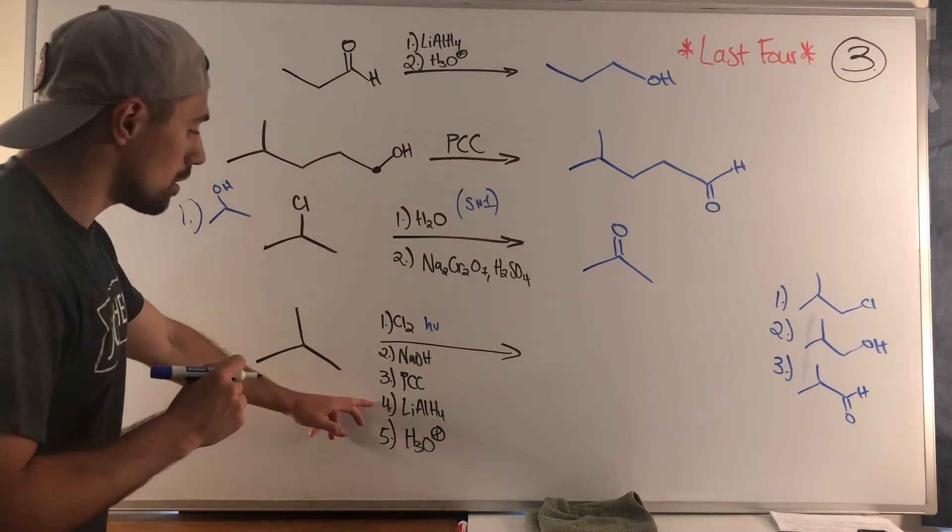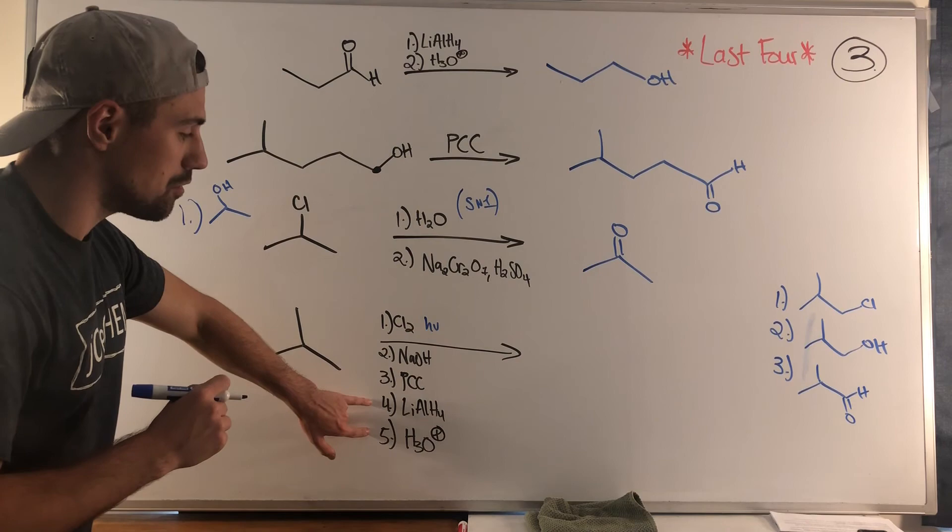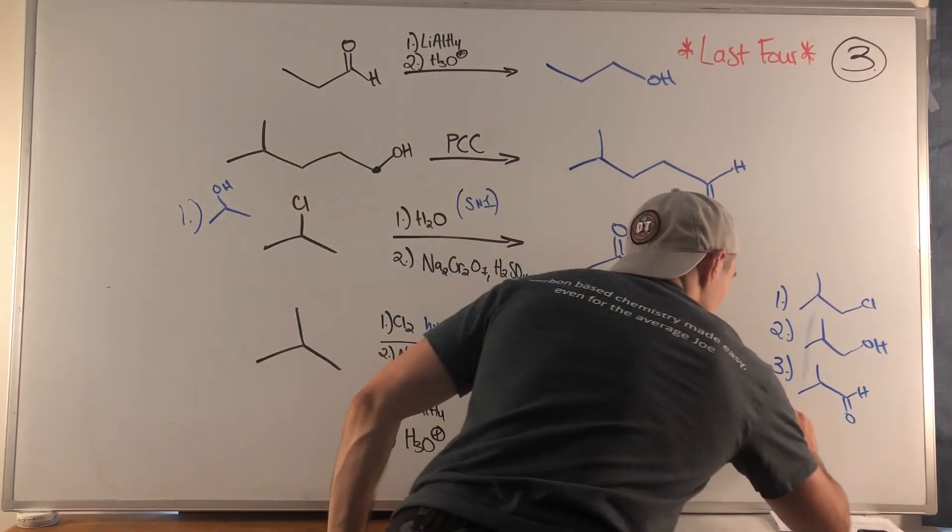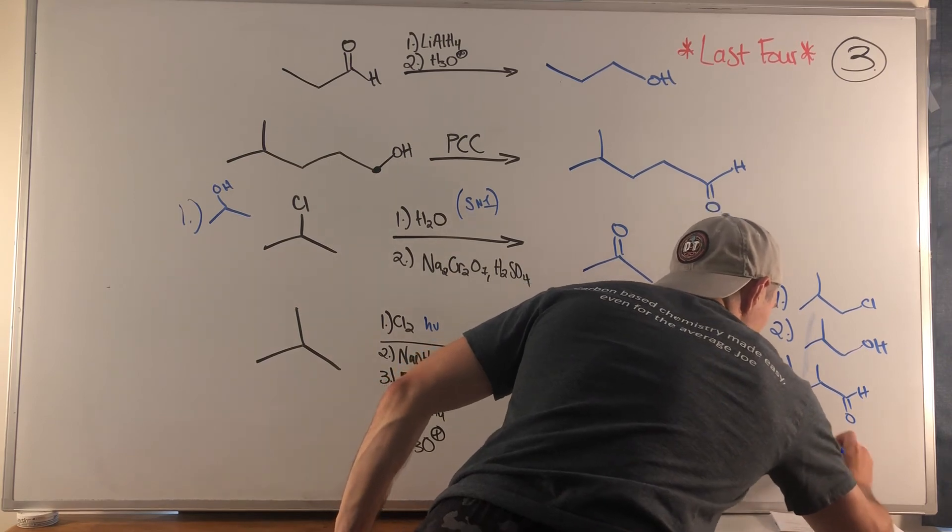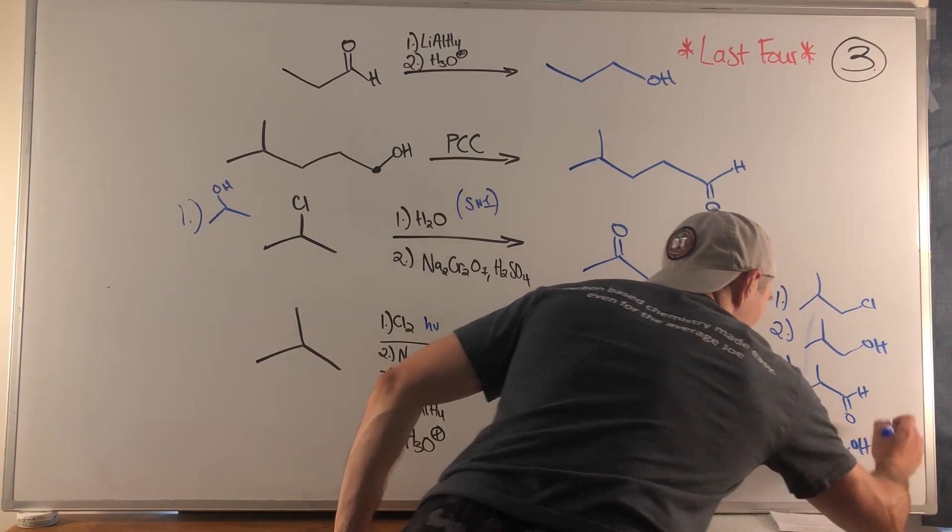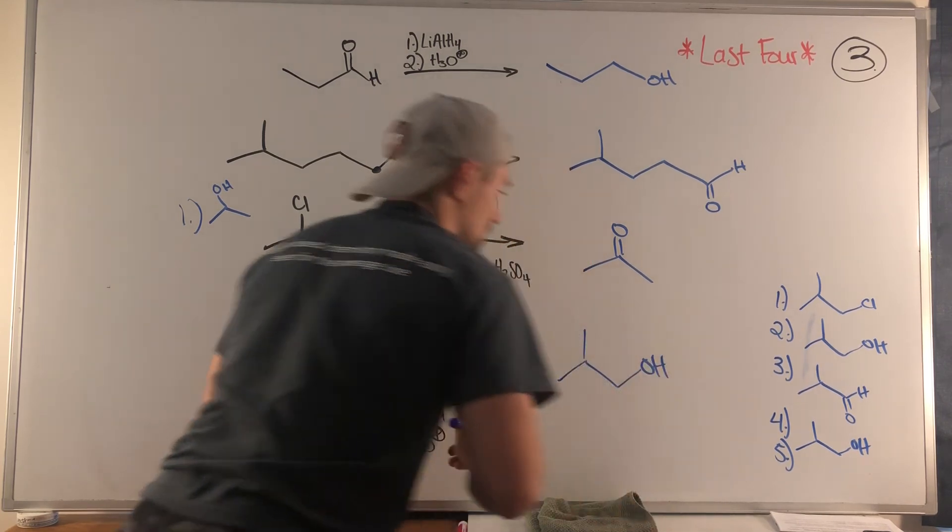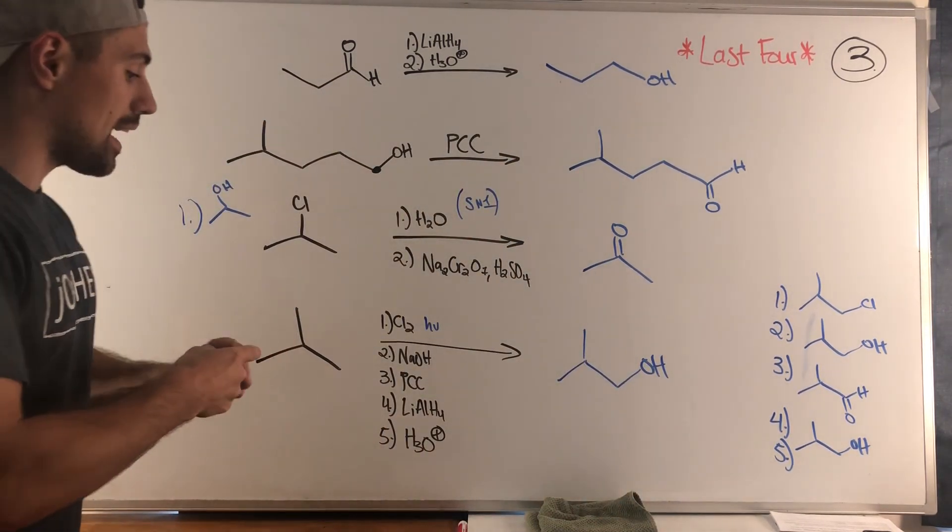Steps four and five we're doing a reduction. Four and five actually undo step three, so four and five mean we actually go back to that primary alcohol. Our final product is this right there.